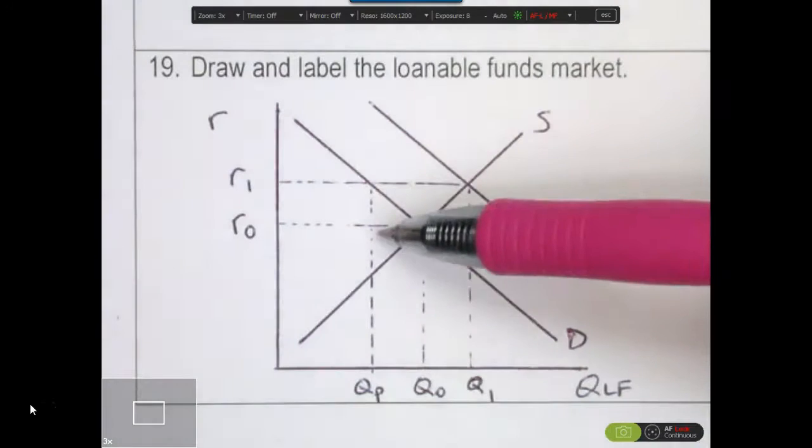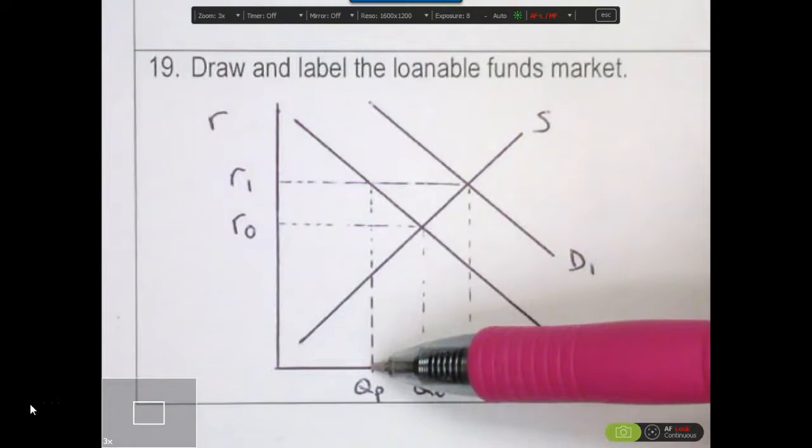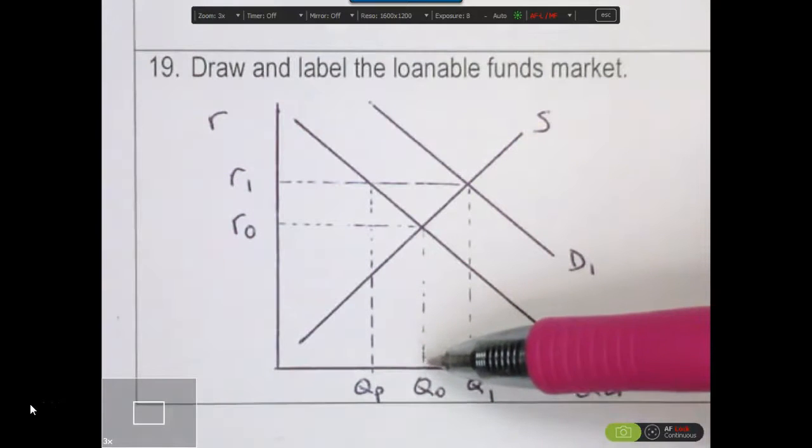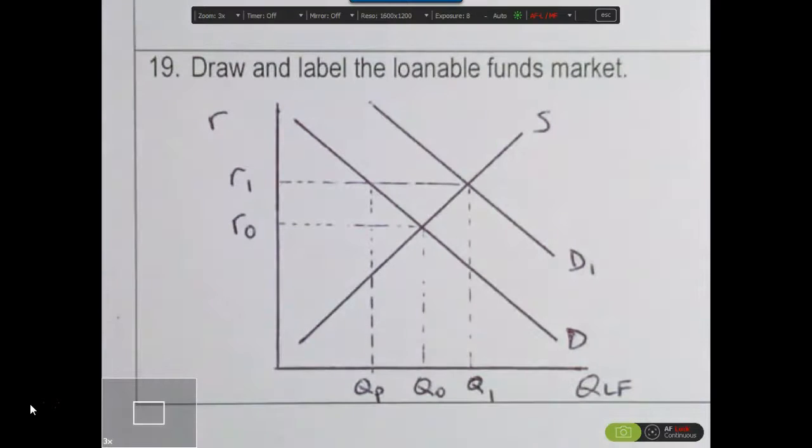So we're going to see a certain amount of loanable funds from QP, which is the private amount that's going to be borrowed, to the original equilibrium. This amount of borrowing is now gone. That is crowded out because now firms are unwilling to borrow at that higher price.